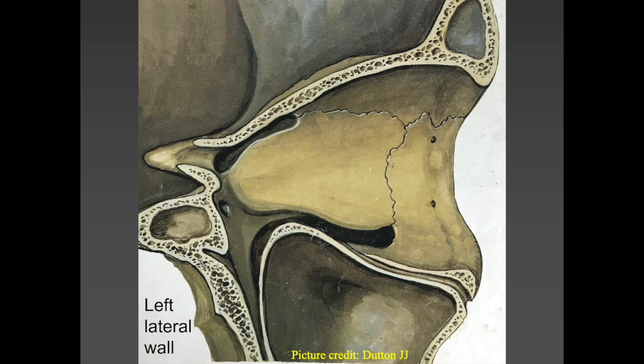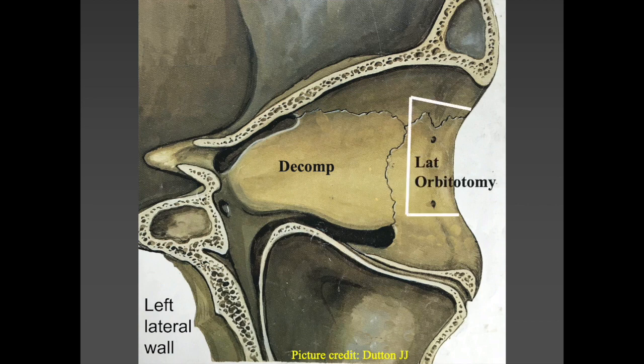Looking at the lateral wall, we mostly have the greater wing of sphenoid and the zygoma. The sphenoid is used for decompression and the zygoma is used for lateral orbitotomy, which is done rarely these days, where you want to remove a piece of the orbital rim to get access to the deeper parts of the orbit or the intraconal space.